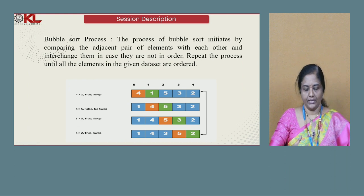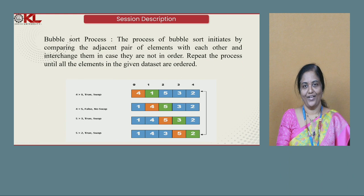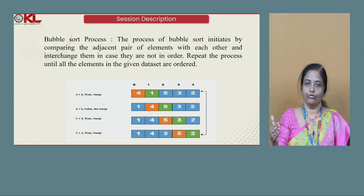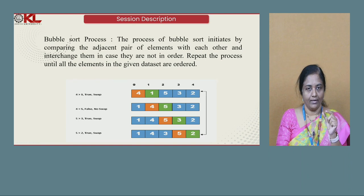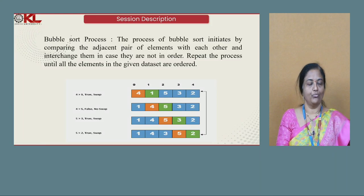Let us understand the available sorting techniques, and we start with bubble sort. You may wonder: what is the name bubble — is it an air bubble or water bubble? It is a data bubble. Suppose I ask you to sort an integer array of five elements in ascending order. In bubble sort, the largest numbers are bubbled towards the end of the list, and the smallest values are bubbled towards the beginning of the list.